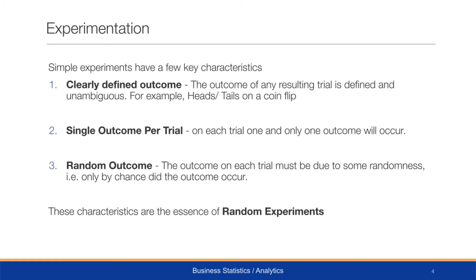The single outcome per trial means that on each trial, one and only one outcome will occur. For a coin flip, either heads or tails will occur, not both. Additionally, the outcome on each trial must be due to some randomness — that is, it only occurs by chance, without some other factor at play in the experimental trial. These characteristics are the essence of random experiments, and this is what we're focused on.